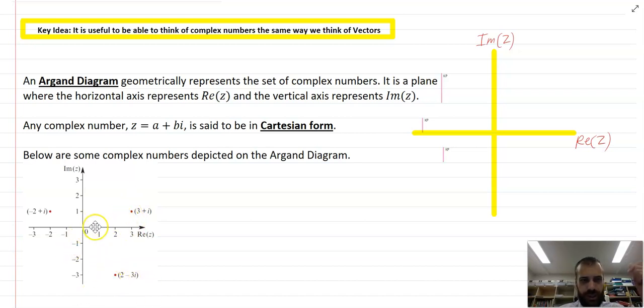Here two minus three i, two across and negative three i down and you get the idea. So the real components on the x-axis or the real axis and the imaginary components on the y-axis or the imaginary axis.